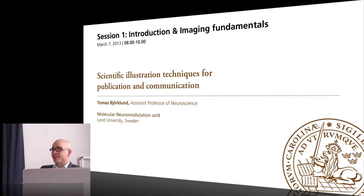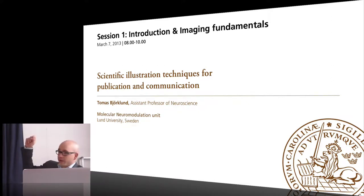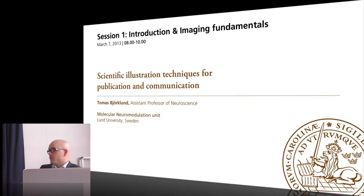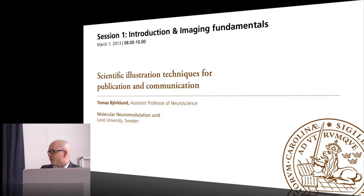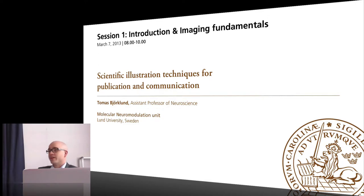I could introduce myself first. I'm Thomas Bjorklund and I'm assistant professor of neuroscience. I run a small research group. I just established my group back in 2011, so it's quite new. I have two PhD students, two masters students, and a lab tech. We're working a bit on gene therapy in Parkinson's and Alzheimer's disease.